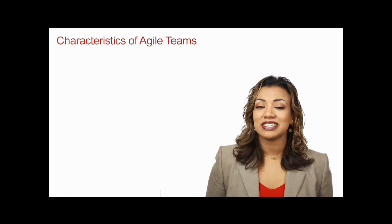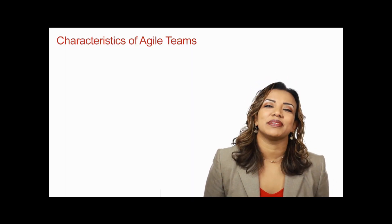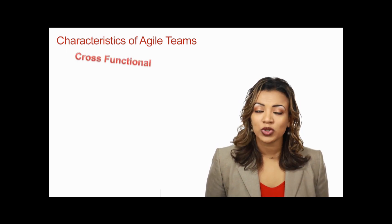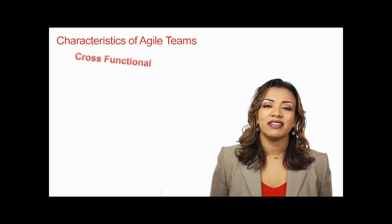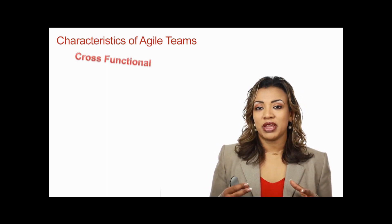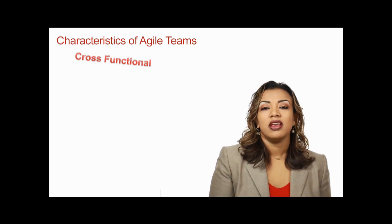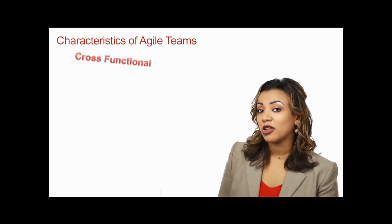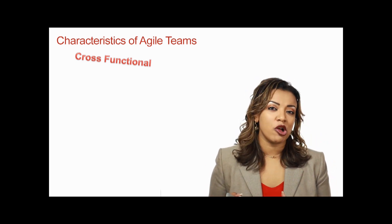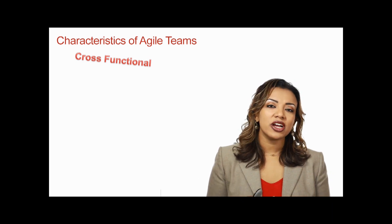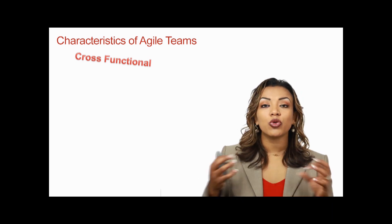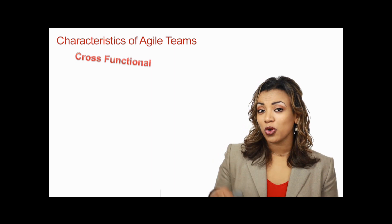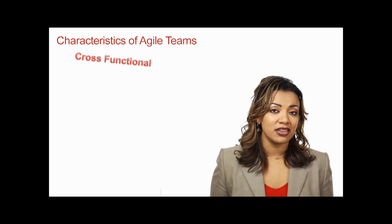What are the characteristics of Agile Teams? Number one, Agile Teams are cross-functional. What does that mean? It means that the team is not made up of business analysts, or a team of testers, or a team of developers. Those are what we call functional roles. Agile Teams are cross-functional — it means that you need all of the roles to get to done.